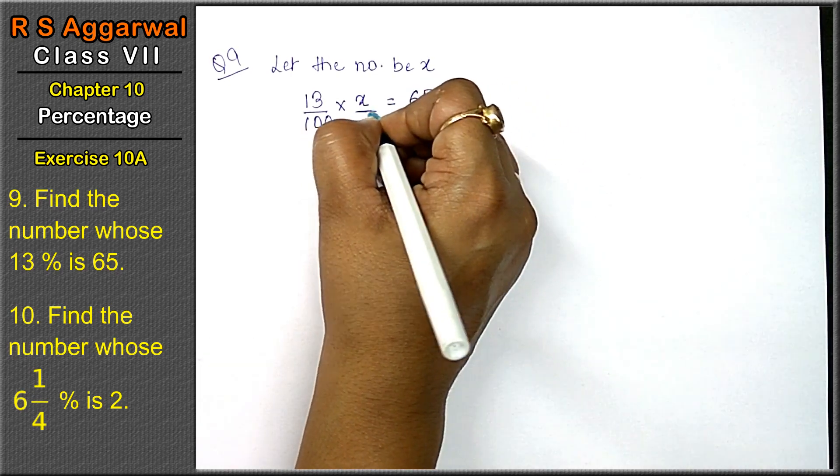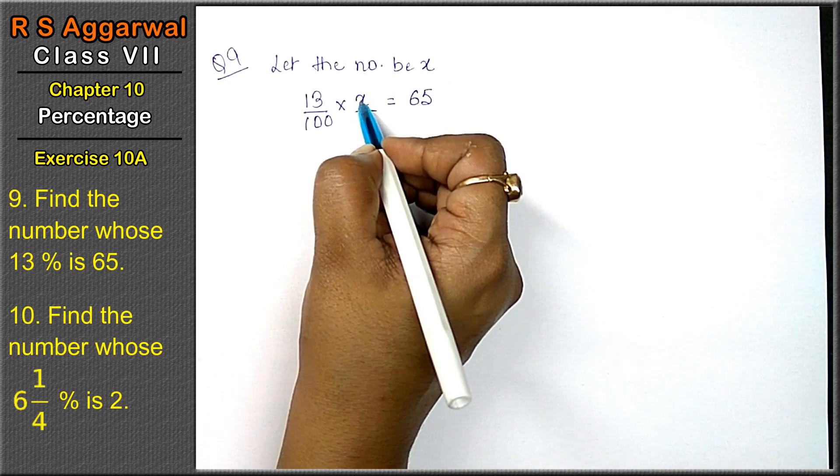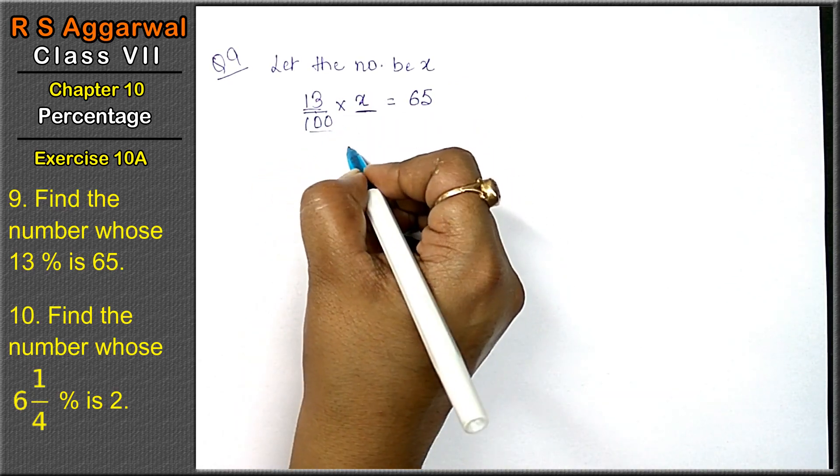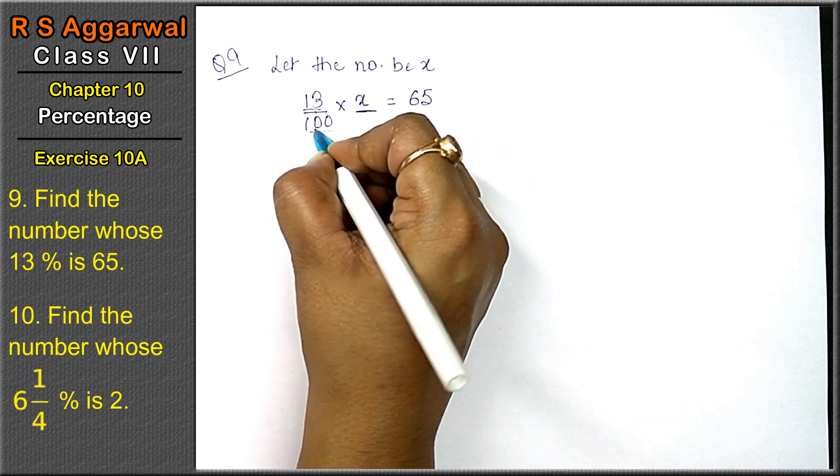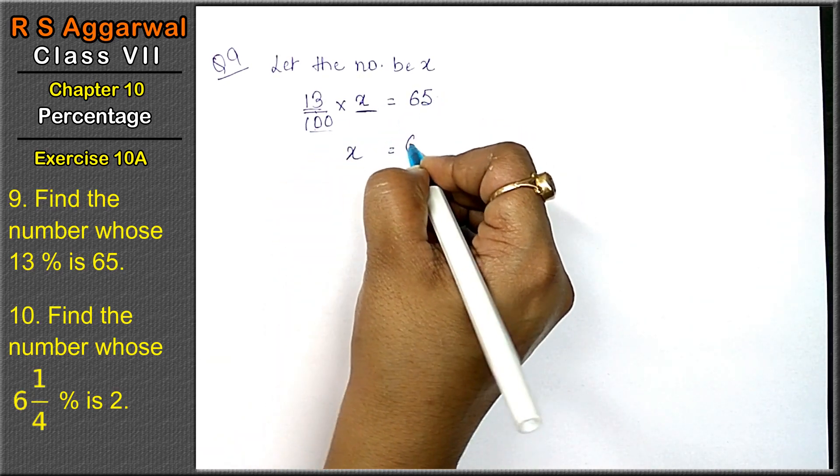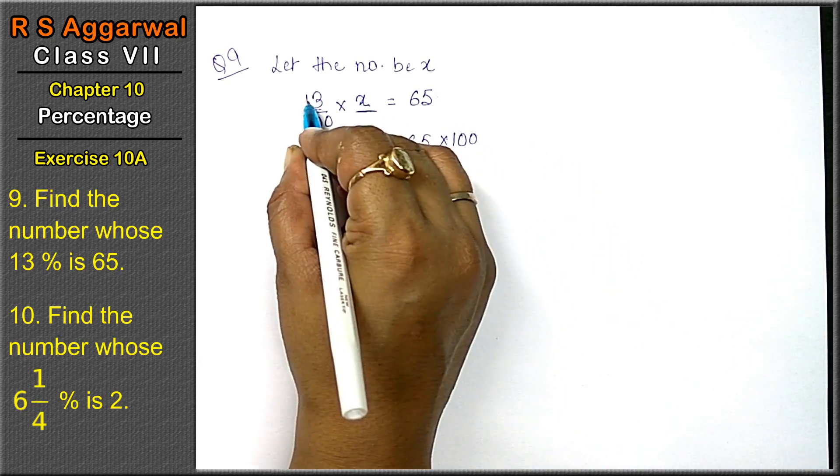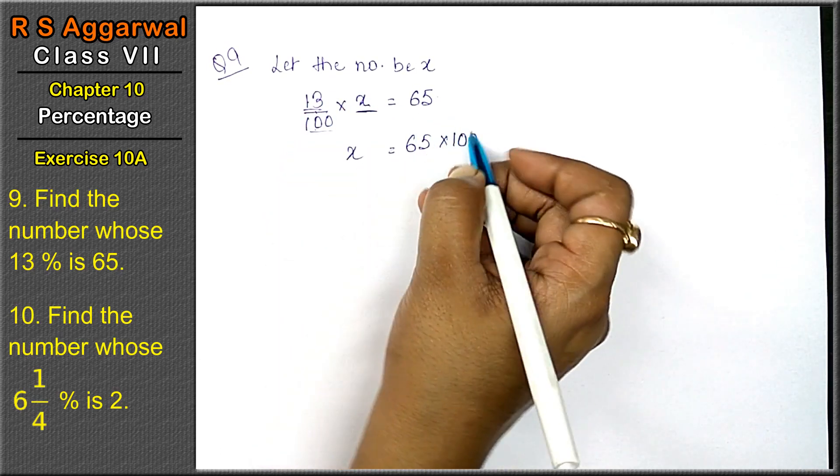Then we have to find that number. x's value is not given. x's value is multiplied and divided. So x's value as it is, the number is below, it will be multiplied by 100. And the number is in the numerator, it will be in the denominator.